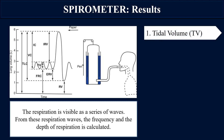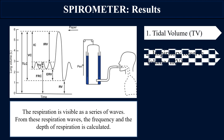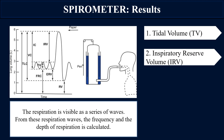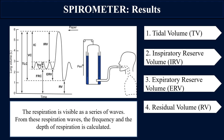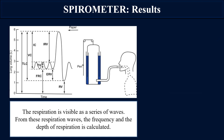The spirometer detects tidal volume (normal inhalation and exhalation), inspiratory reserve volume (normal inhalation to forceful inhalation), and expiratory reserve volume (normal exhalation to forceful exhalation). It does not detect the residual volume, as other methods and techniques are used for that. Similarly, let's talk about which capacities the spirometer will measure.